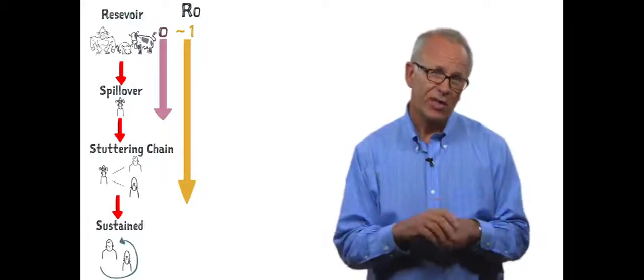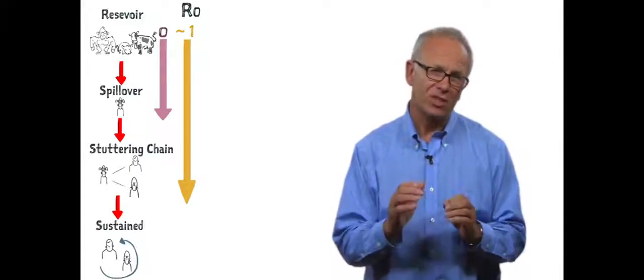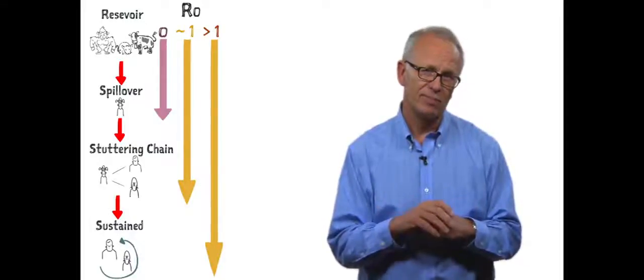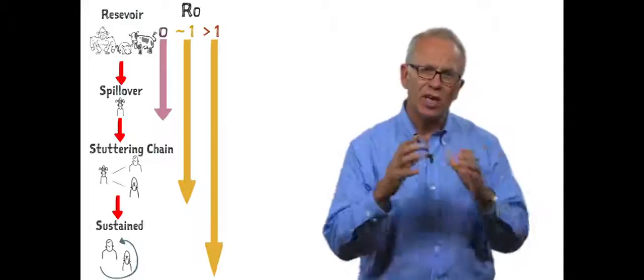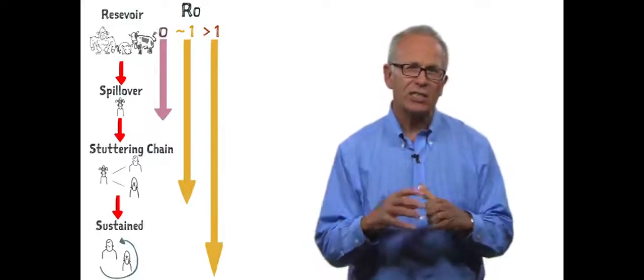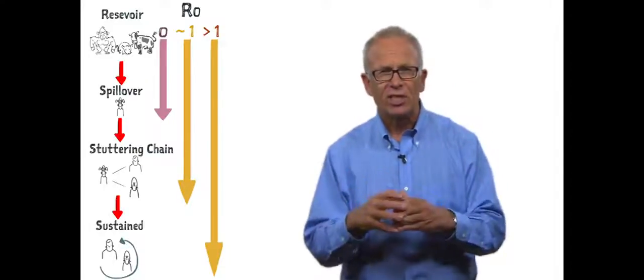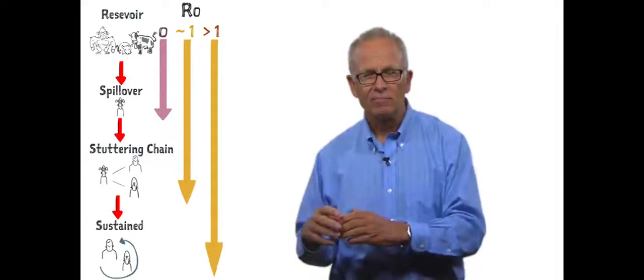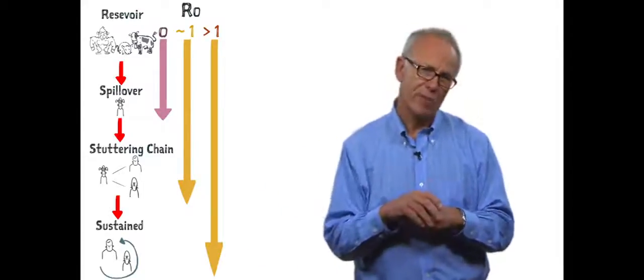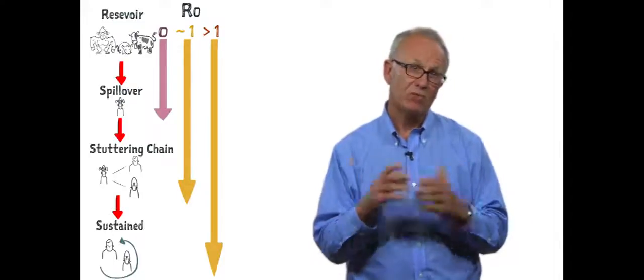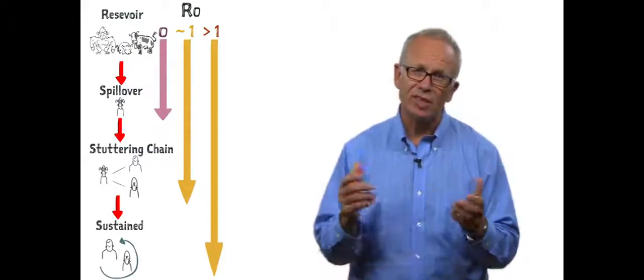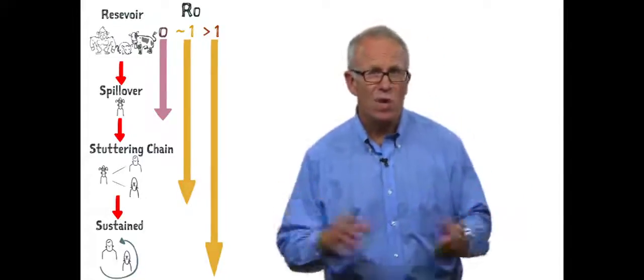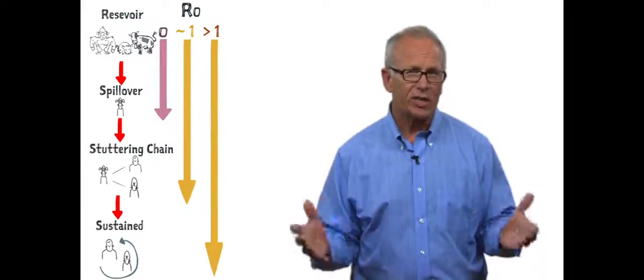The third category is where R naught is substantially greater than one, and there is sustained onward transmission. This is where spillover occurs, and like any other successful infection, the pathogen exhibits onward transmission from one host to the next. And this can result in an epidemic outbreak. Of course, this does not mean that the infection is going to persist in the human population. It may simply burn through a series of hosts and then just fade away.